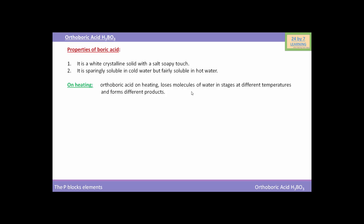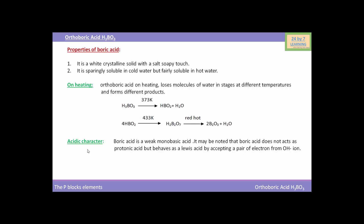Orthoboric acid on heating loses molecules of water in stages at different temperatures and forms different products. H₃BO₃ heated at 373 K forms HBO₂ (oxoborinic acid) and water. When HBO₂ is heated at 433 K it forms H₂B₂O₇ (pyroboric acid). When pyroboric acid is heated until red hot it forms B₂O₃, that is boric anhydride.